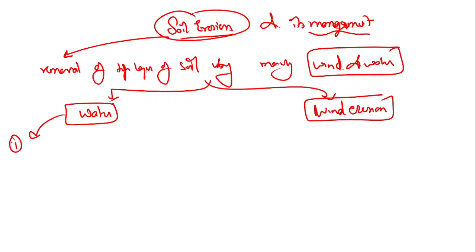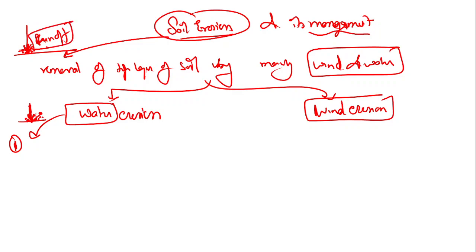In water erosion, water droplets hit the soil particles with such intensity that the soil particles detach from the soil and get free. When water splashes down, soil particles come out and detach. After hitting, the water flows - this flow is called runoff. Because of this runoff, these soil particles move, and this movement causes erosion, depleting the top layer of soil which is essential for crops. The first type is splash erosion.